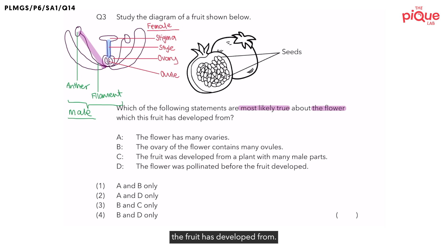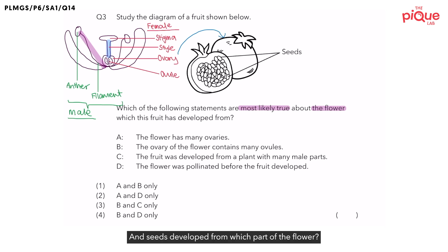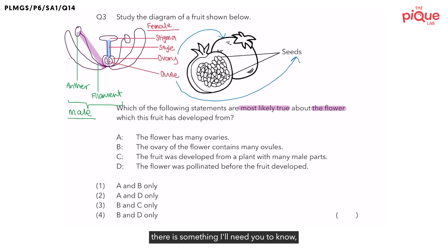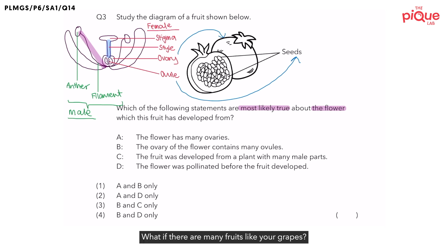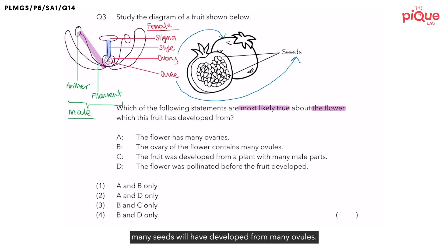Now that we are done labeling the different parts of the flower, let us match the part of the flower the fruit has developed from. The fruit developed from the ovary. And what can we find inside the fruit? We can find seeds. And seeds developed from the ovule. One fruit will have developed from only one ovary. If there are many fruits, like grapes, many fruits will have developed from many ovaries. The same applies for seeds: one seed develops from one ovule, and many seeds develop from many ovules.